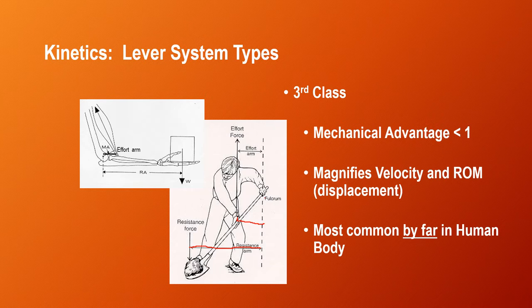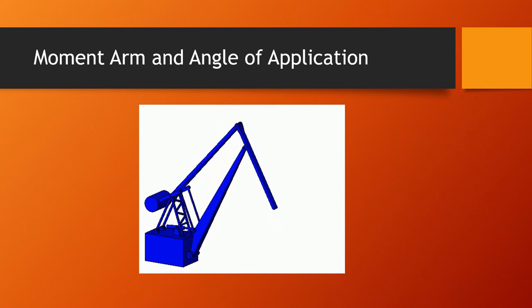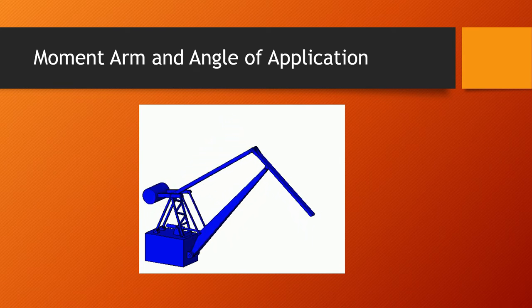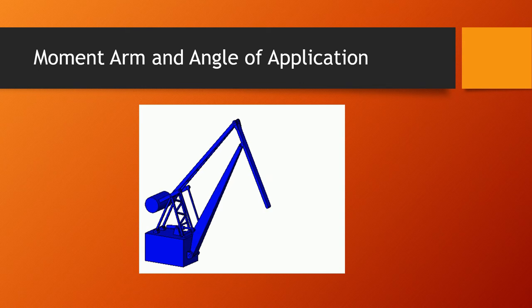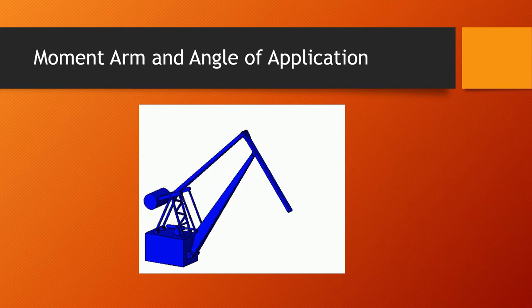An example is the biceps. The axis is the sagittal plane axis of the elbow joint. The effort arm is the distance between that axis and the point of attachment of the biceps, and the resistance arm is the distance between the axis of the elbow and the center of mass of the forearm and hand. How much torque a muscle generates to move a limb segment around its axis is a factor of its moment arm. How much torque is applied by gravity or external forces is also a factor of moment arm. How much of the muscle force is applied to the bone it's moving is a factor of its angle of application.